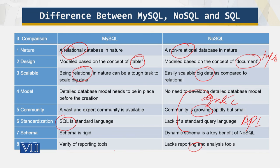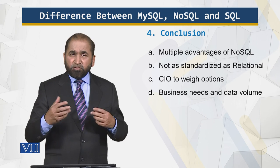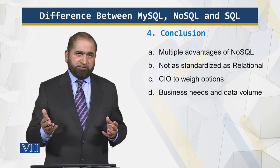In conclusion, NoSQL has multiple advantages including scalability, performance, open source availability, and cost. However, it is not as standardized as the relational model. There are many versions because whenever programmers came across a problem they could not solve with existing NoSQL models, they developed their own solution and made it public — which is why it is not well standardized.